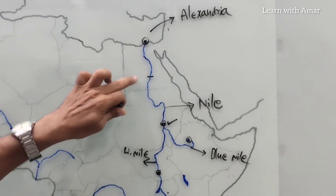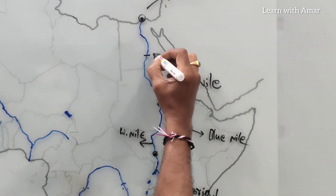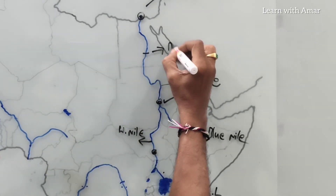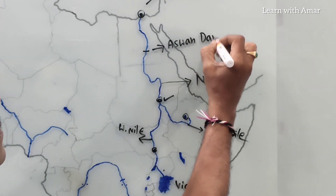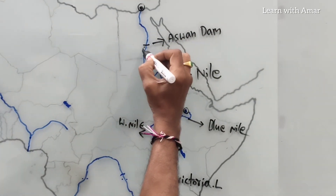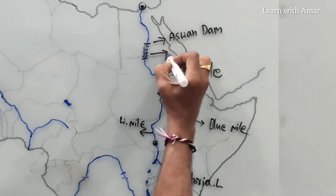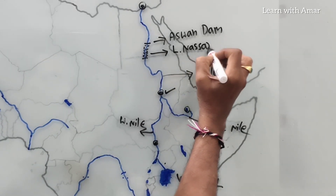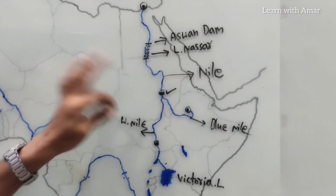This is the river and this is the dam. The dam constructed across the Nile River is Aswan Dam. Because of this dam, we see an artificial lake here. This artificial lake is called Lake Nasser — named after Nasser, the president of Egypt at one time.